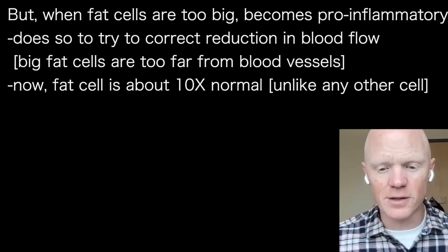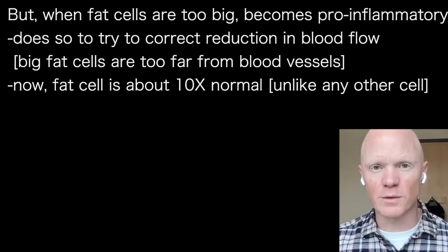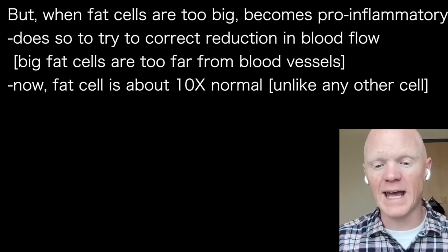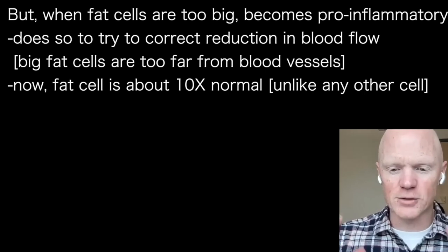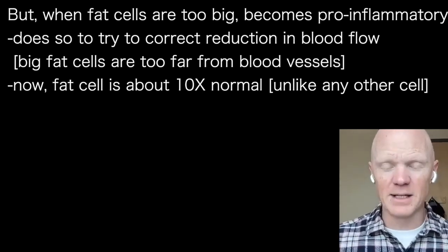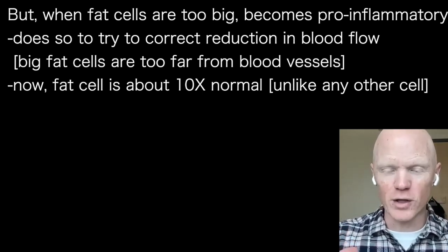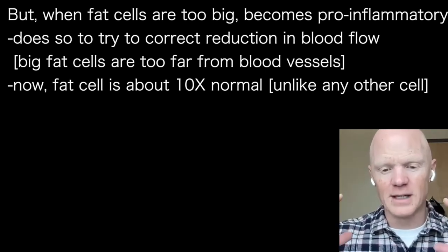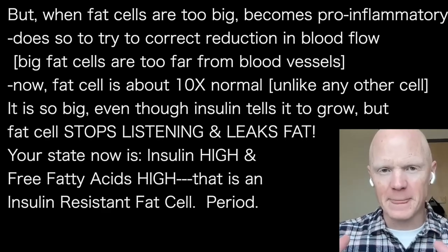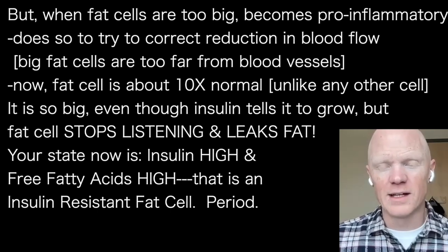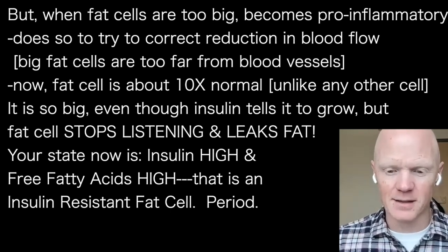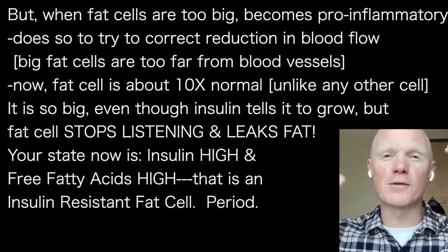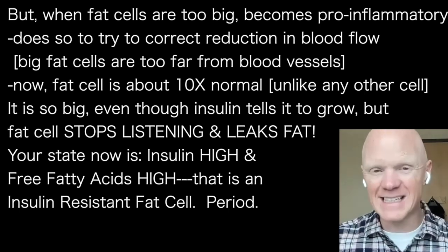However, when the fat cell has undergone significant hypertrophy — swelling to about ten times its normal volume, unlike any other adult cell — it becomes pro-inflammatory, partly to correct reduced blood flow as fat cells grow too far from blood vessels. At that point, even though insulin keeps signaling the fat cell to grow, the fat cell stops listening and starts leaking fat out. You now have a state where insulin is high, reflective of an insulin-resistant body, but free fatty acids are also high, reflective of an insulin-resistant fat cell.